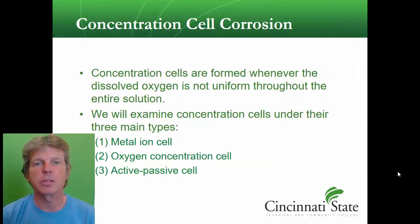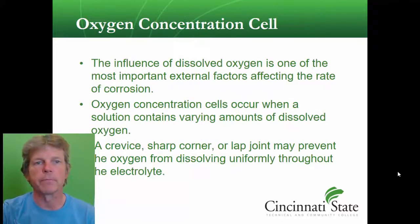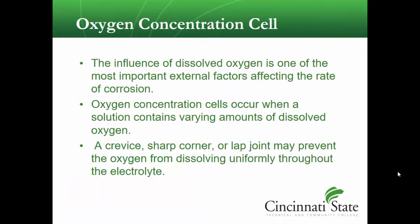The oxygen concentration is a key portion of this type of corrosion. Whenever there's dissolved oxygen, it's not uniform throughout the solution — that non-uniformity leads to concentration cell corrosion. The influence of dissolved oxygen is one of the most important factors affecting the rate of corrosion, so more oxygen will make it corrode quicker.